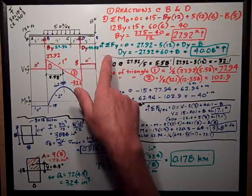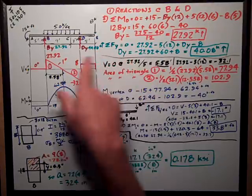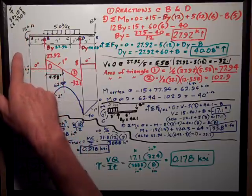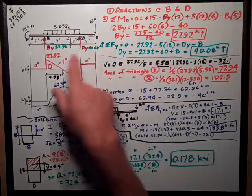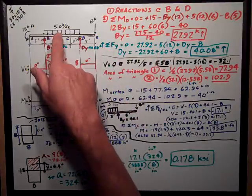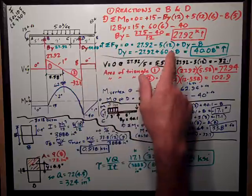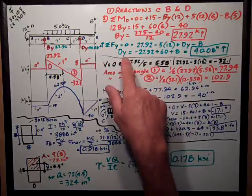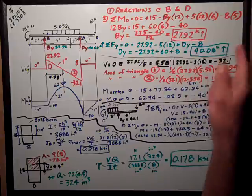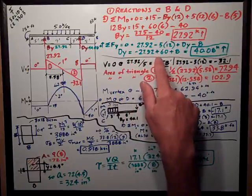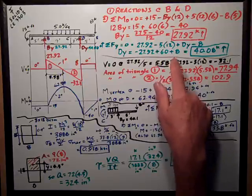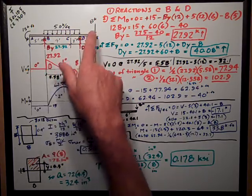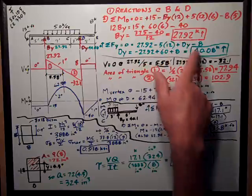Sum forces in the Y direction, 0 positive is up. I have 27.92 from BY. Note that this is a couple moment. It doesn't do anything for the forces in the Y or X direction. So I have 27.92 up from BY minus 5 kips per foot times 12 feet, plus DY, the unknown, minus this 8 kips out here at the end. So I get DY is equal to, take all these other things to the other side of the equal sign, negative 27.92 plus 60, 5 times 12, plus 8 is equal to 40.08 kips up. I'll look real quickly at what I have is 5 times 12 is 60 plus 8. I have 68 kips. That's the sum of these two reactions.